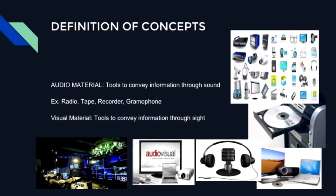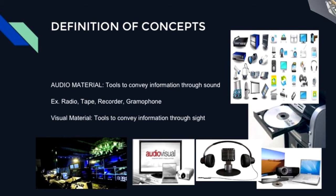Definition of Concepts: Audio material refers to tools to convey information through sound, like for example the radio, tape recorder, and gramophone. Visual material refers to tools to convey information through sight.